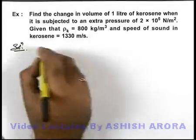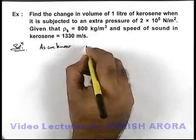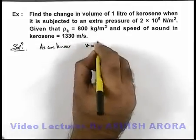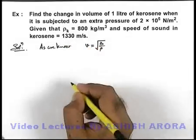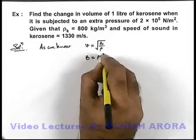Now here, as we know, the sound velocity in a fluid can be given as root of its bulk modulus by density. Bulk modulus for a medium can be given as ρv².